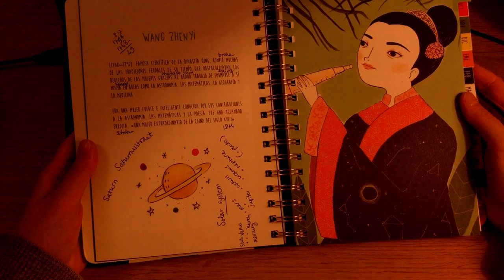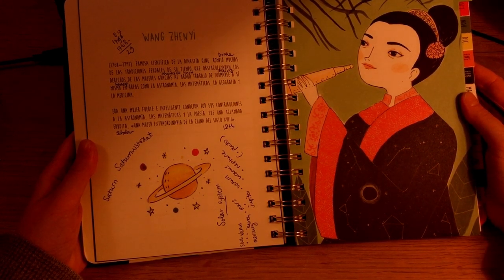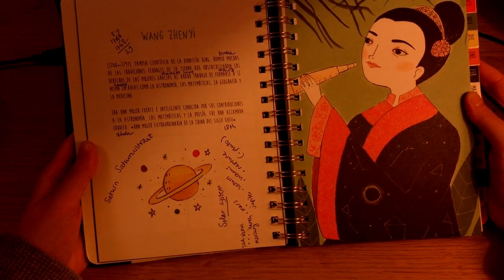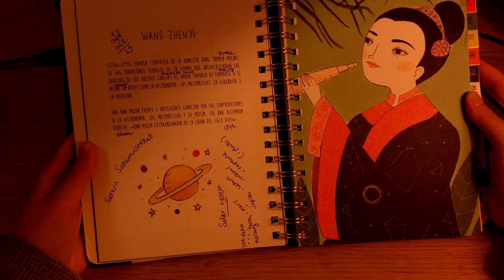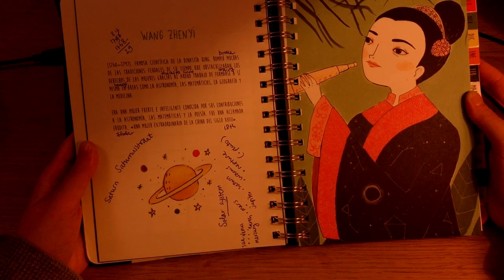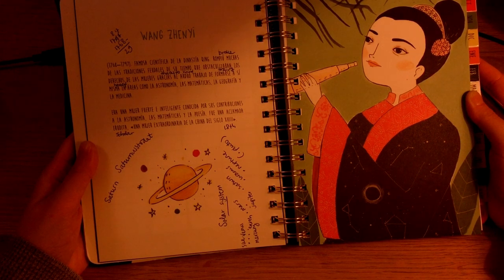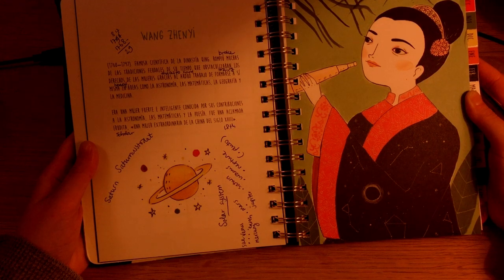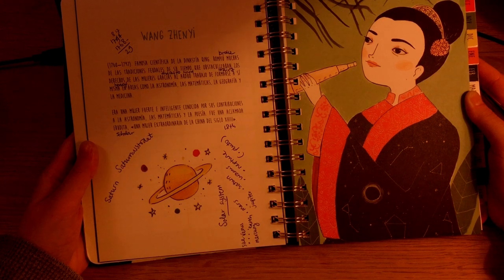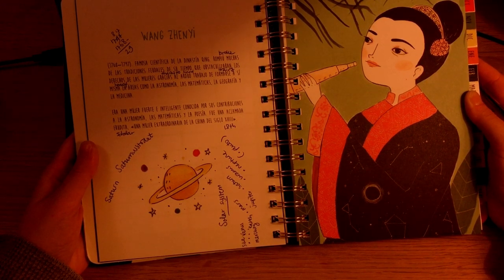So there we are. Wang Zhenyi. Okay, let's see if we can do it. She was a famous scientist from the Qing dynasty. She broke many of the feudal traditions of her time that obstructed the rights of women thanks to her hard work of training in the areas of astronomy, math, geography and medicine. She was a strong and intelligent woman known for her contributions in astronomy, math and poetry. She was an acclaimed scholar, an extraordinary woman from China from the 18th century.